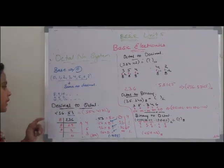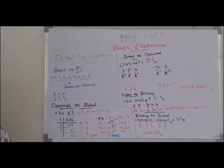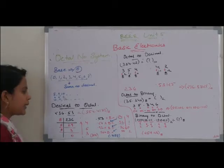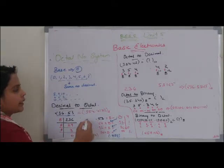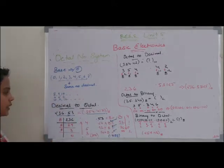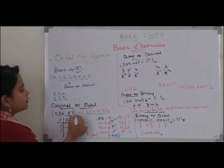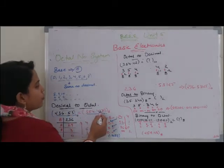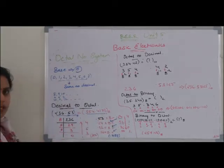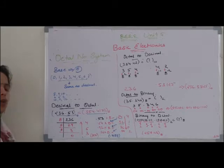So combining the whole number part and the fraction part, the decimal number converted to the octal number system gives us 354.4172. I hope decimal to octal number system is clear — it is very similar to decimal to binary number system conversion.